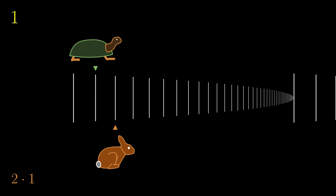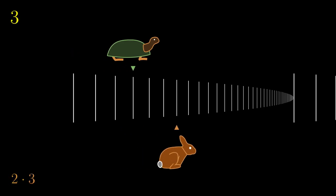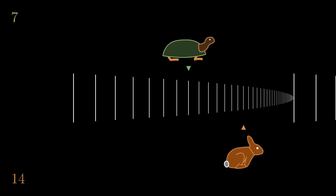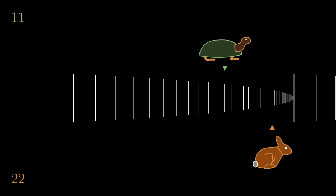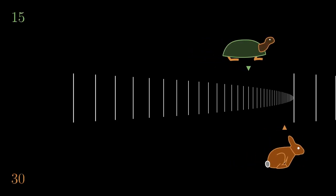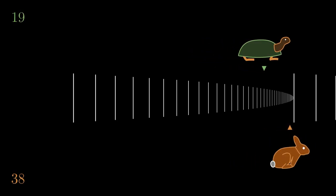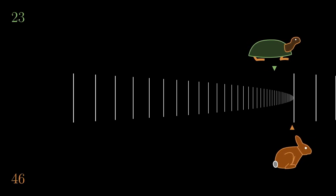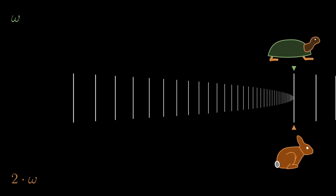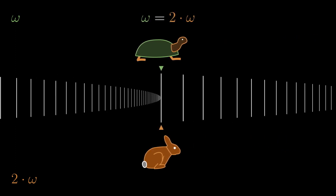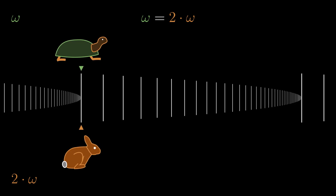After 1 step, the turtle is at index 1, the rabbit at index 2. After 3 steps, the turtle is at index 3, the rabbit at index 6. And the race continues. The rabbit runs 2 times faster, but we can see that they are both just approaching the same limit index omega, so they are both reaching index omega simultaneously. That is represented by the fact that 2 times omega equals omega.